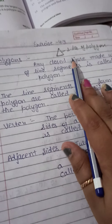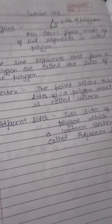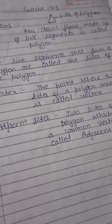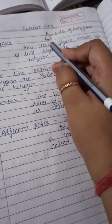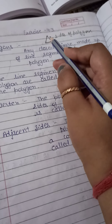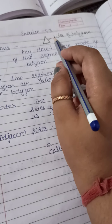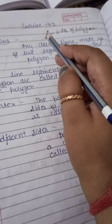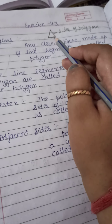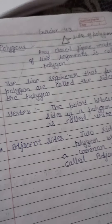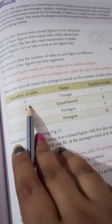On the basis of these sides, polygons are of many types. In this polygon — triangle — how many sides does it have? Three. This figure has one, two, three sides. So its name is triangle.